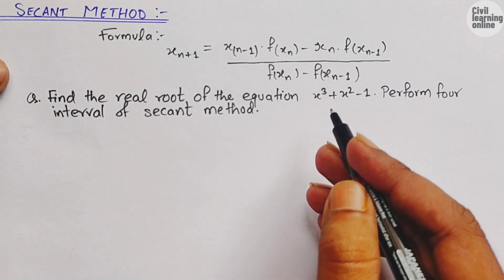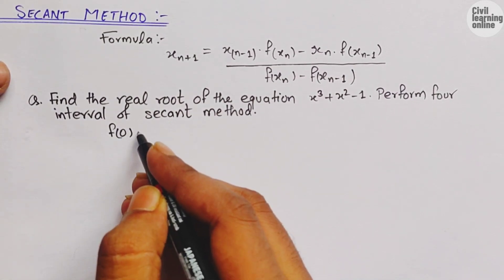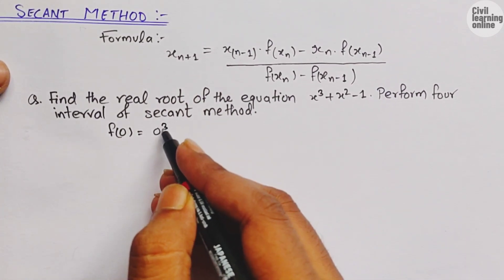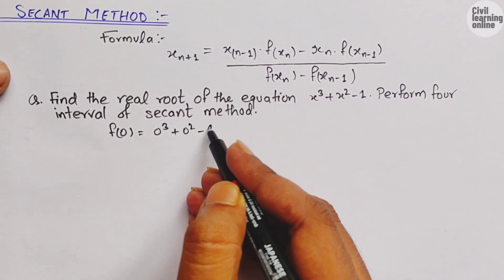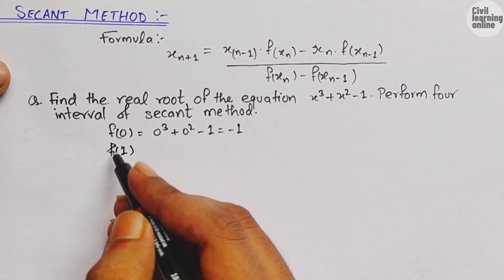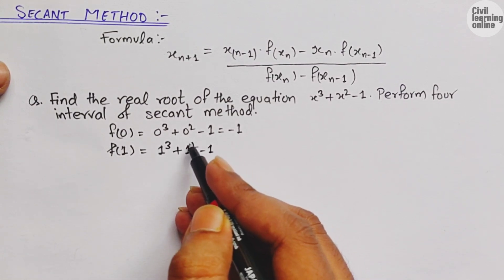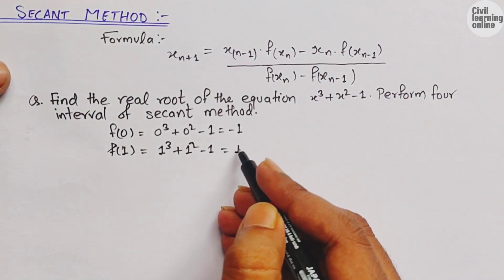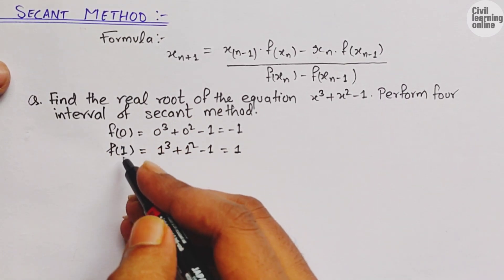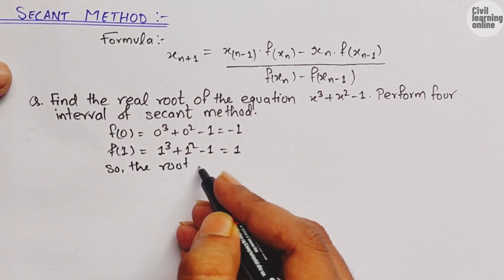This is similar to what we do in the bisection or regular falsi method. Let's check if the root lies between 0 and 1. We compute f(0): putting x = 0 gives 0³ + 0² - 1 = -1. Then f(1): 1³ + 1² - 1 = 1. We got one negative and one positive value, which means the root lies between 0 and 1.